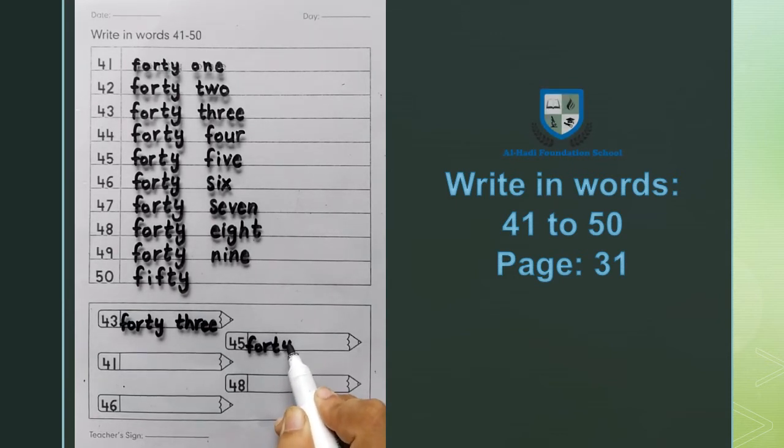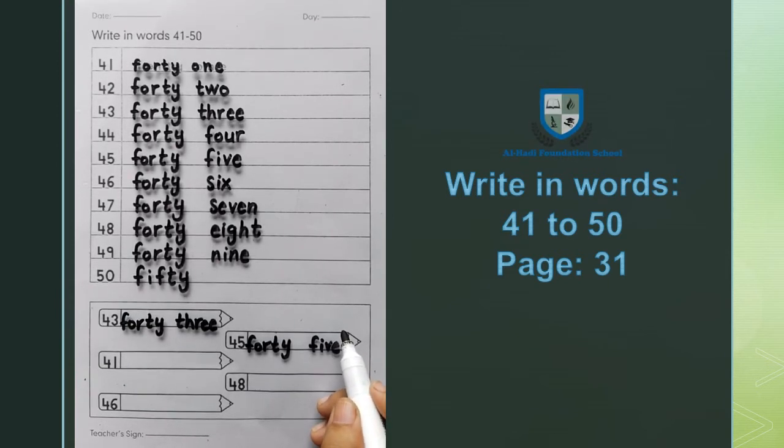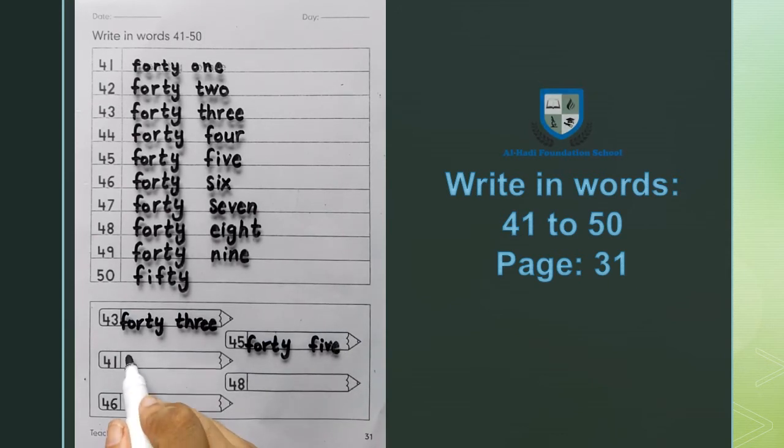45: F O R T Y, forty, F I V E, five, forty five. Next 41: F O R T Y, forty, O N E, one, forty one.